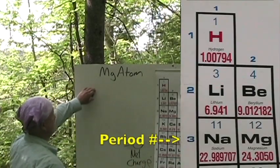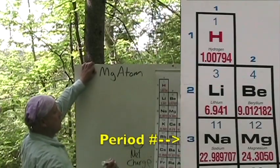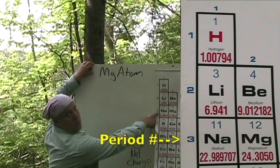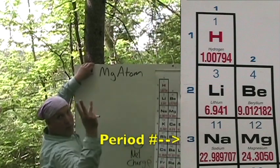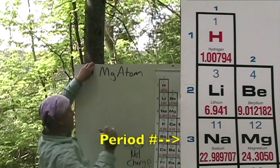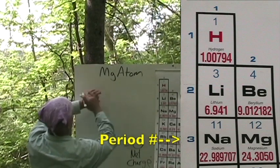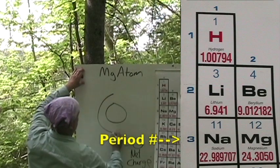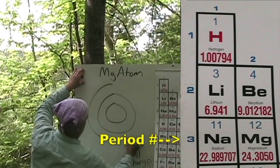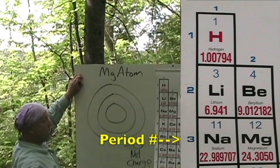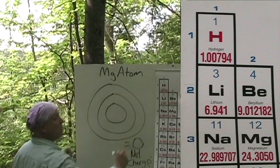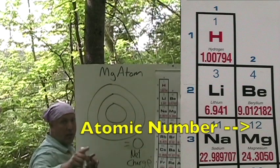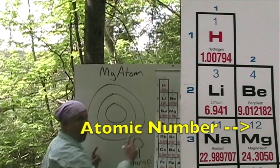So magnesium is over here in Period 3. So how many energy shells do we have? Three. 1, 2, and 3. So now we have 3 energy shells. Very easy to tell the number of protons — atomic number of 12.